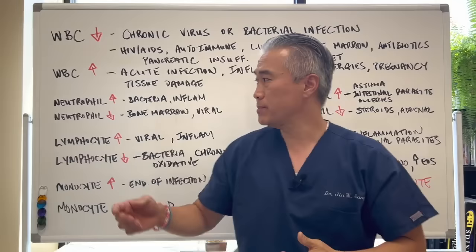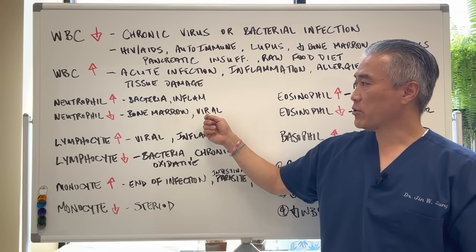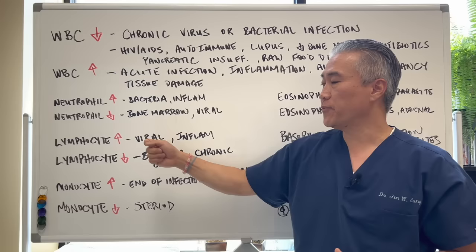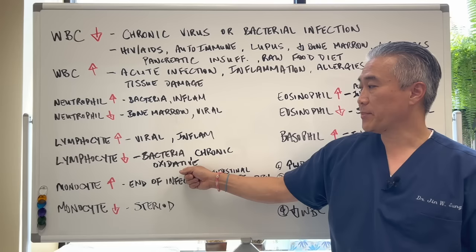An increase in neutrophils can be related to bacterial infection and inflammation. A decrease in neutrophils can be bone marrow suppression or viral infections. With viral infections, you're going to have an increase in lymphocytes and a decrease in neutrophils. Lymphocytes when increased can indicate acute viral infection or inflammation; when low, they can indicate bacterial infection, chronic infection, or oxidative stress.